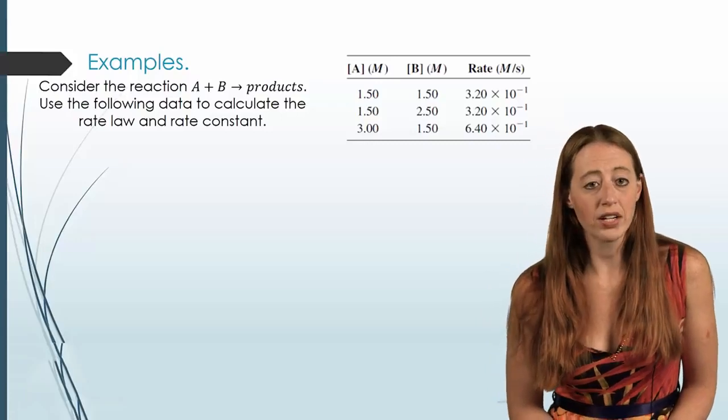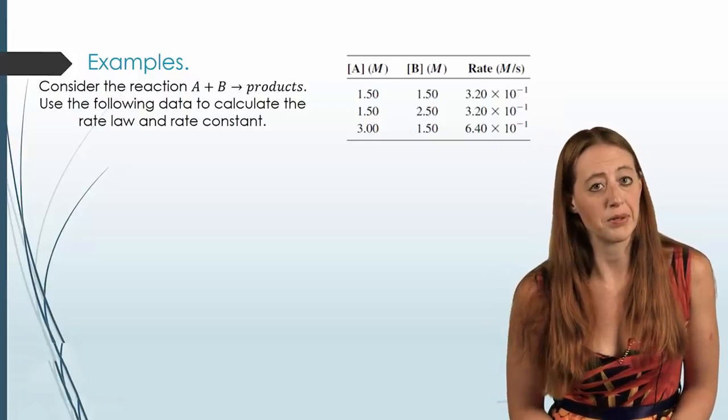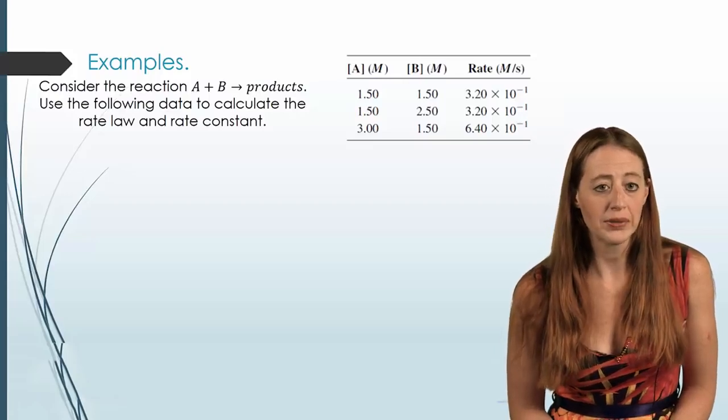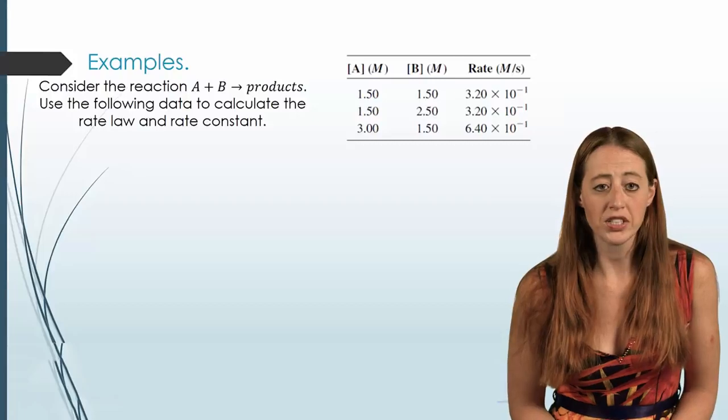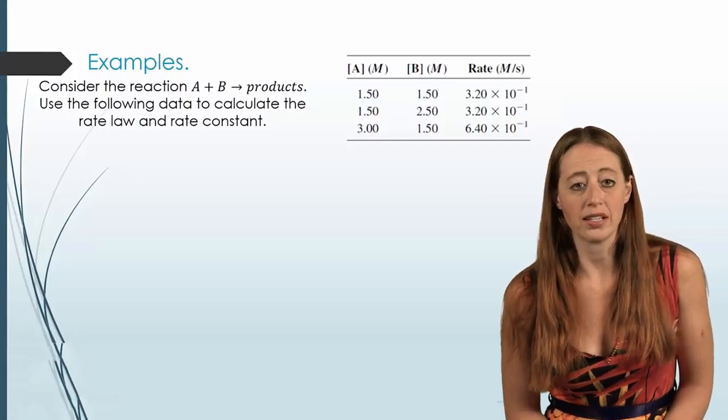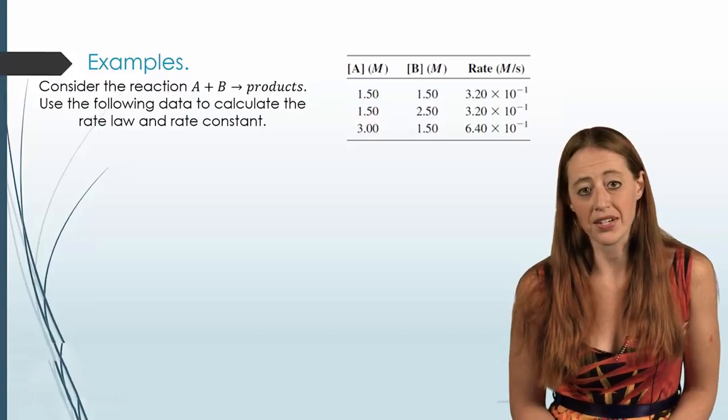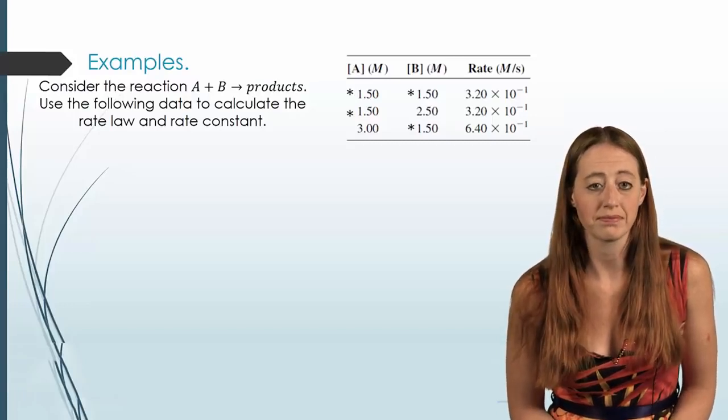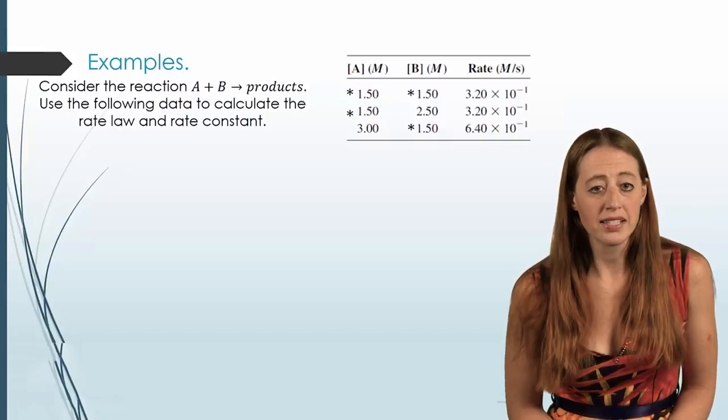So let's look at this one. Here I've already set the data up for you. We have a reaction of A plus B goes to products. Use the following data to calculate the rate law and the rate constant. So in each case, I'm showing you the concentration of the initial species, and I'm showing you the rate of the reaction that comes off from that.